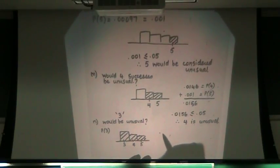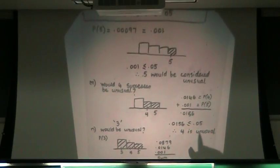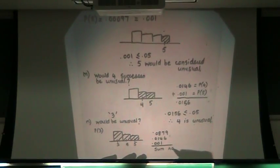Can you read me the probability of three? 0.0879. Wow, it's already greater than or equal to five, it's already bigger than five percent, right? So certainly 0.0879 plus 0.0146 plus 0.001, all that added together, the sum is not less than or equal to 0.05.